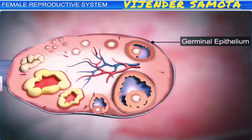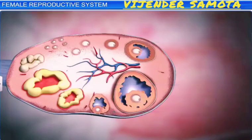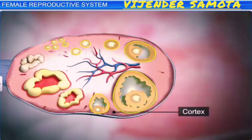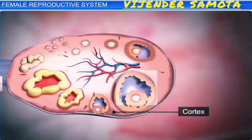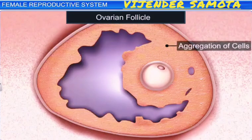The germinal epithelium encloses the ovarian stroma, which is further divided into the outer cortex and the inner medulla. The cortex consists of many ovarian follicles in different stages of development. The ovarian follicle is the basic unit of the female reproductive system, and is composed of roughly spherical aggregations of cells found in the ovary.